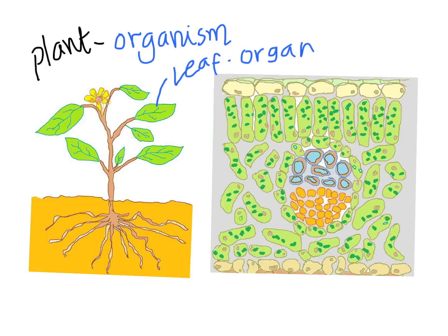We are going to be looking at the labels and names in a moment, but I am just identifying these tissues for now. Have a look at this top layer of cells — they appear to have no chloroplasts and are transparent to light. Those cells are all very similar in structure and function, so that is one type of tissue. Here we have irregularly shaped cells with lots of spaces in between them, which forms another major type of tissue.